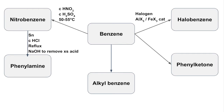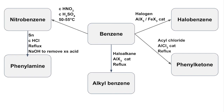The fourth conversion is benzene to alkylbenzene — that's where you substitute the hydrogen atom on the benzene ring for an alkyl group such as methyl, ethyl, propyl, etc. To do that, you react benzene with the relevant haloalkane. For example, if you wanted to put a propyl group onto your benzene ring, you could use chloropropane. If using a chloroalkane, you would use an aluminium chloride catalyst, and that needs to be done under reflux.